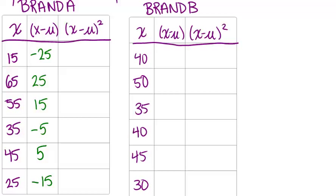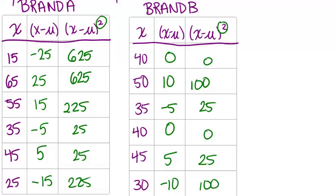Now I'll do the same thing for brand B. Take each of the x values and subtract 40 because that was also the mean for brand B. Now to fill in the last column in each table, we're going to take the difference between our x values and the mean and square them. So negative 25 squared, 25 squared, and so on. Okay. Now that we have all the squared values in there, we can continue with our formula.